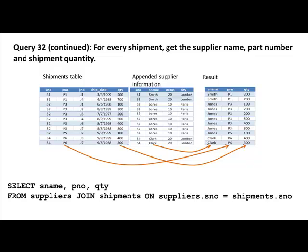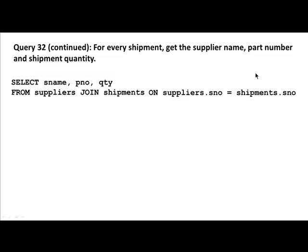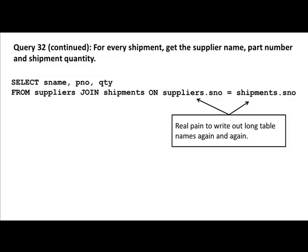Interesting queries in SQL almost always involve joins, so you really need to understand join syntax properly. When writing joins, the table names repeat — for example, suppliers.supply_number and shipments.supply_number. Typing these long table names again and again can get tedious, and SQL allows a shorter way to do this.